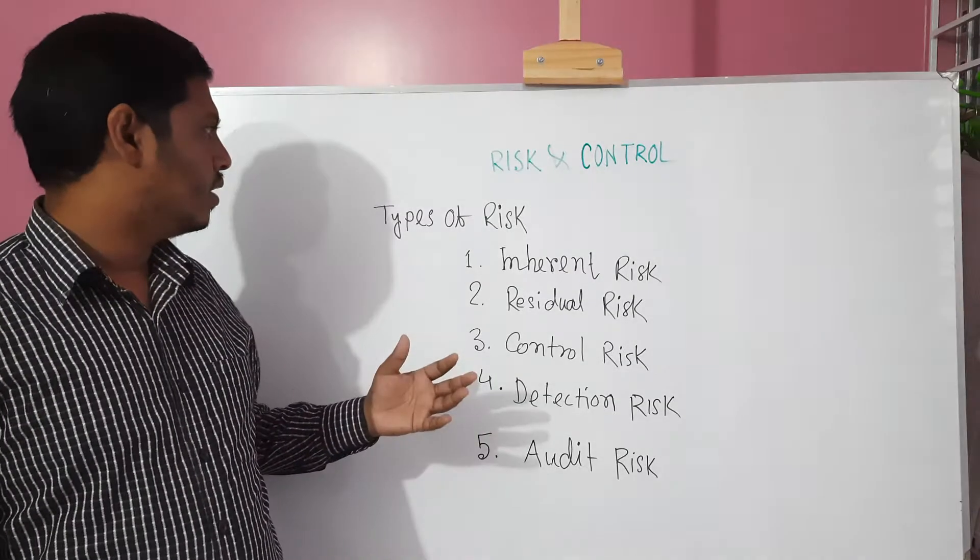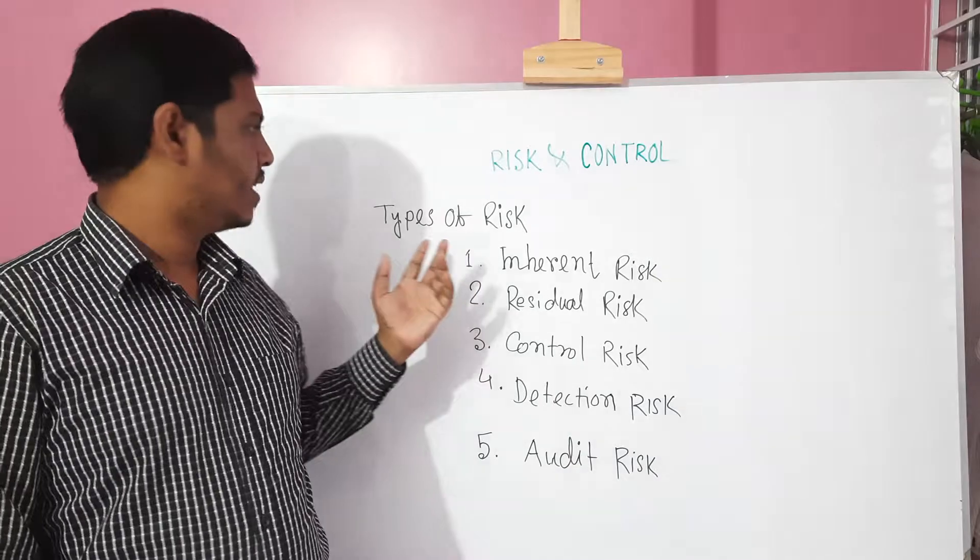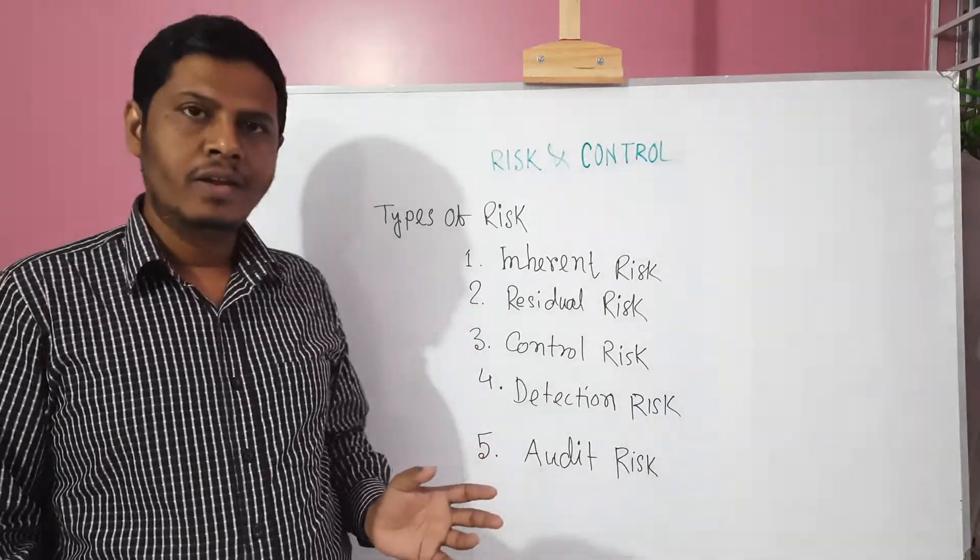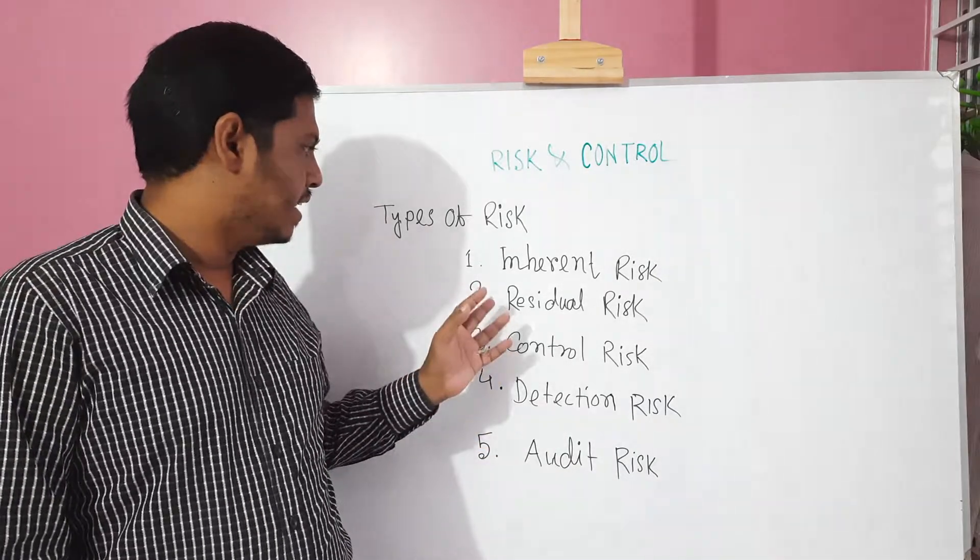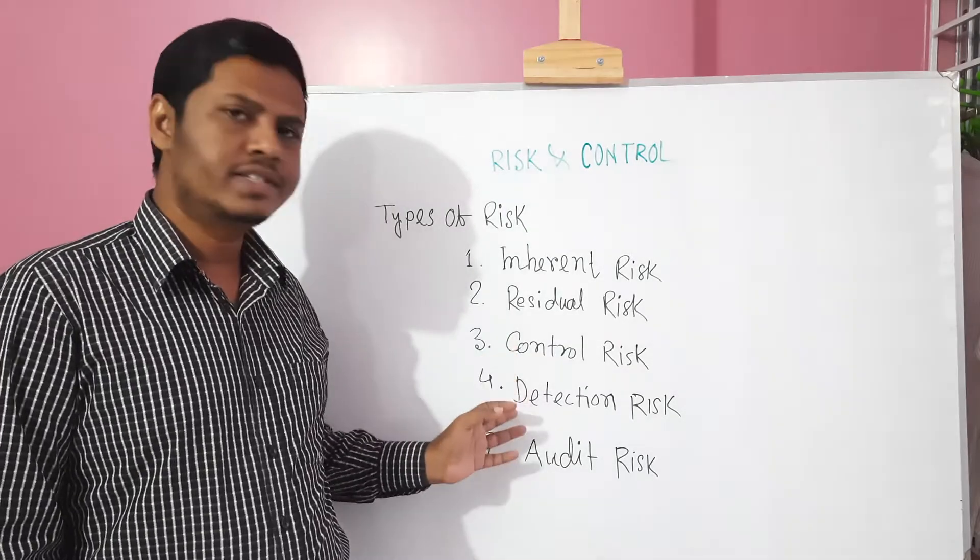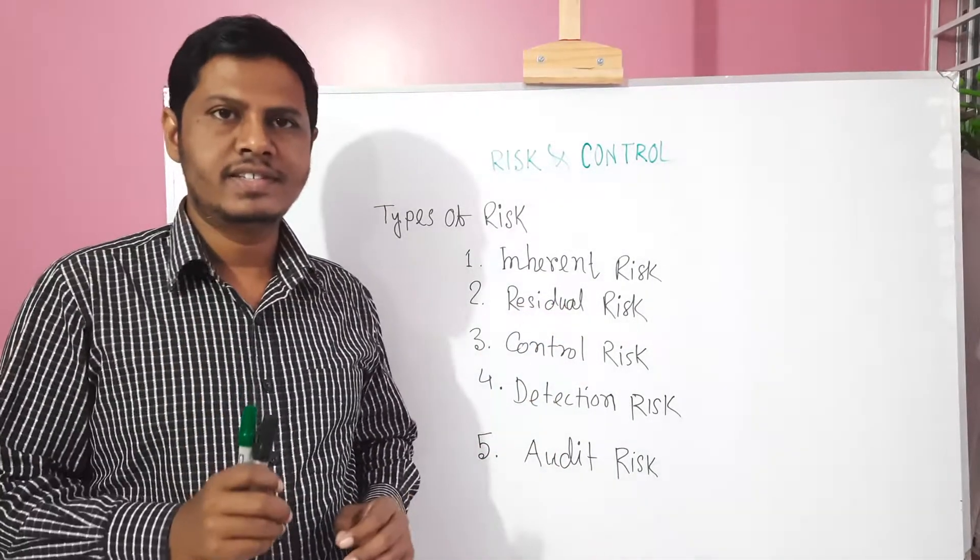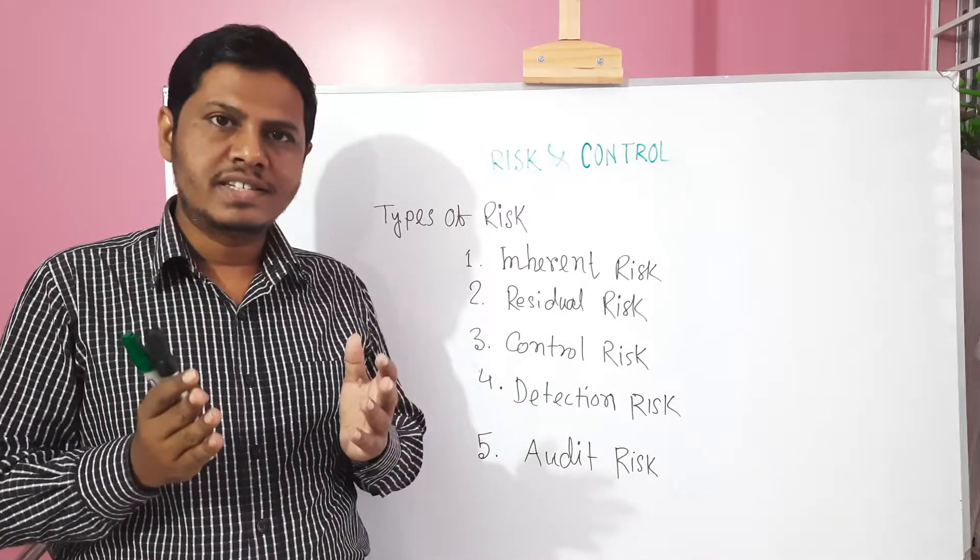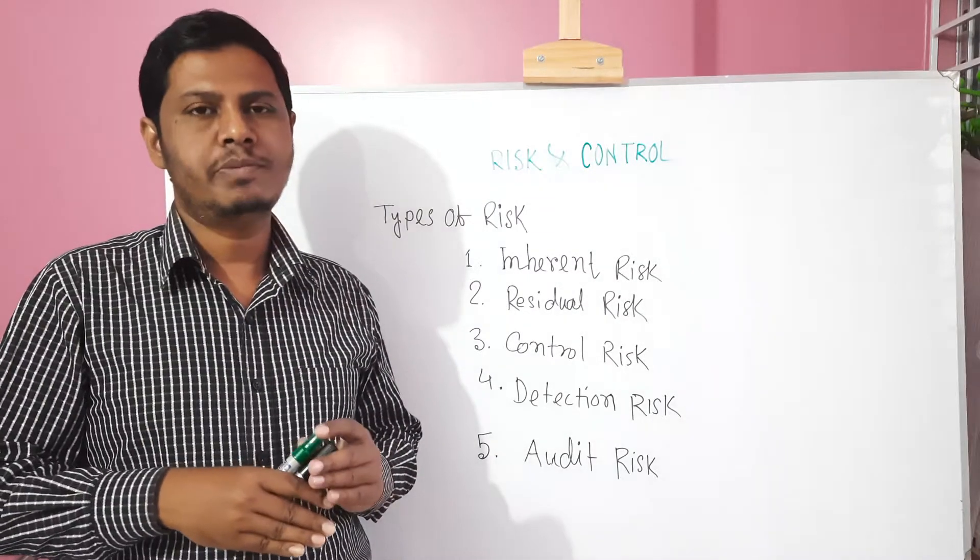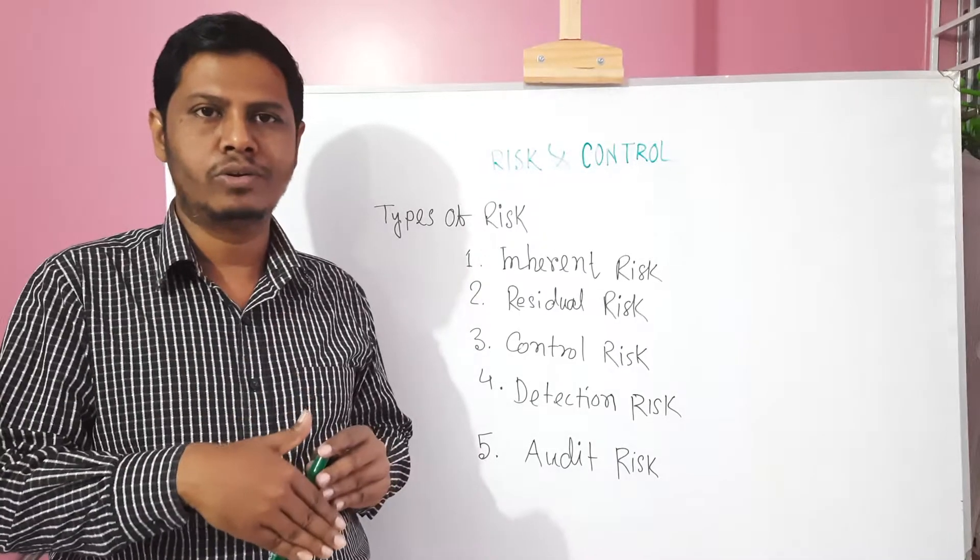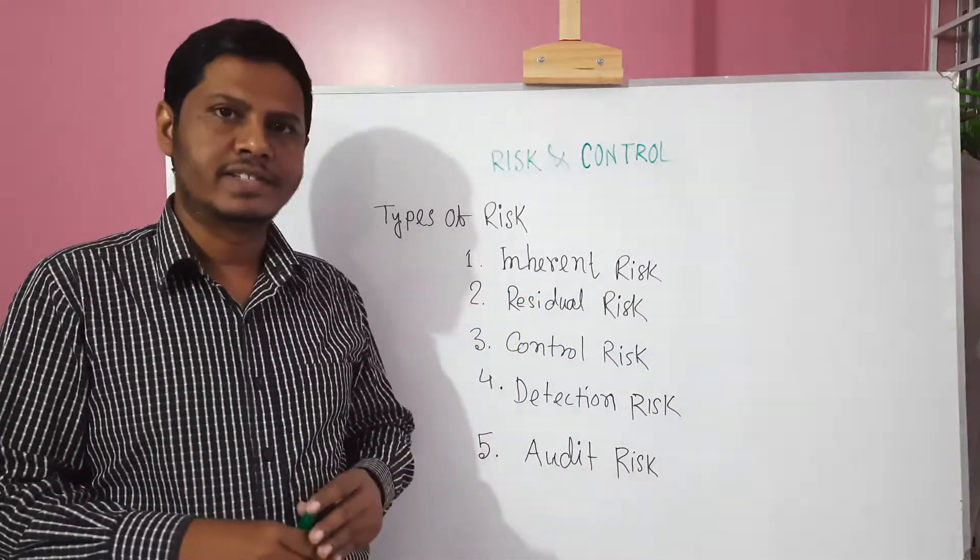Now, we are talking about risk types. Actually, there are main five types of risk: inherent risk, residual risk, control risk, detection risk, and audit risk. Inherent risk is that risk that exists before implementing a control. It's called the inherent risk.